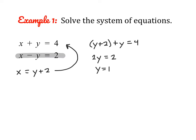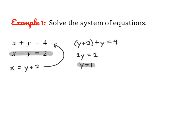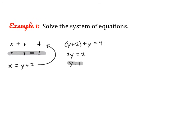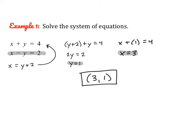So y equals 1. Now that we have our y value, we can substitute it into either of our original equations. Substituting into the first one: x plus 1 equals 4, so x equals 3. Since this is a system of equations, we write our answer as a coordinate, because what's happening is we have two lines crossing at a point. That point of intersection — an x, y coordinate — is our answer: (3, 1).